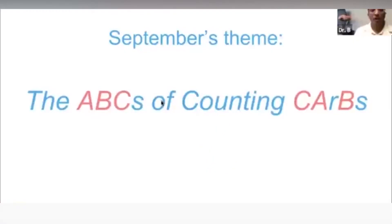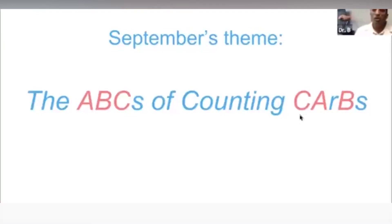Let's get started with the ABCs — the ABCs of carb counting. We know diabetes is a 24/7 disease. There are lots of decisions to be made: check sugars, take medications, exercise. Many of these decisions could be postponed, but there's one decision that has to be made three times a day or more, and that is eating. What matters for patients with diabetes with respect to their sugars is carbs. So today we'll talk about the ABCs of counting carbs.